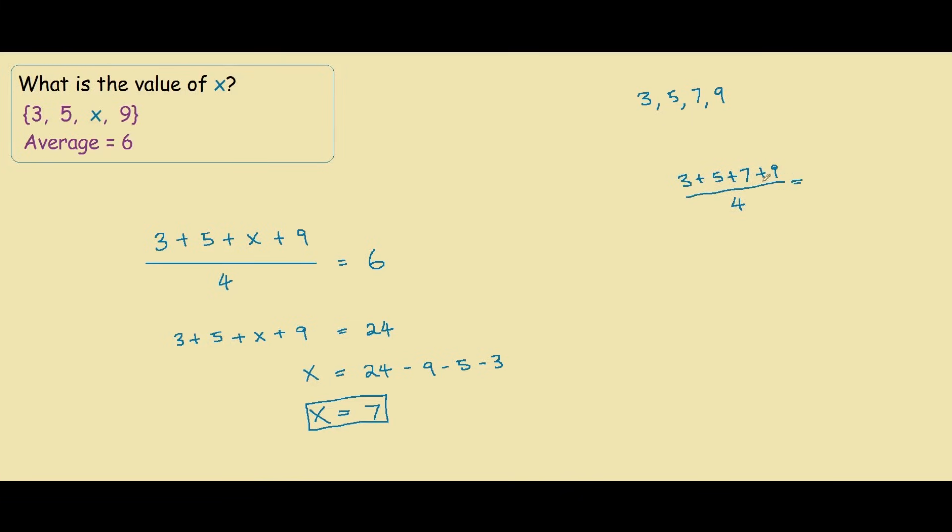This would be equal to 3 plus 5 is 8, plus 7 is 15, plus 9 is 24. So 24 divided by 4 equals 6, and that is what we were told in the question. The average is 6, so this confirms that our missing value was 7.